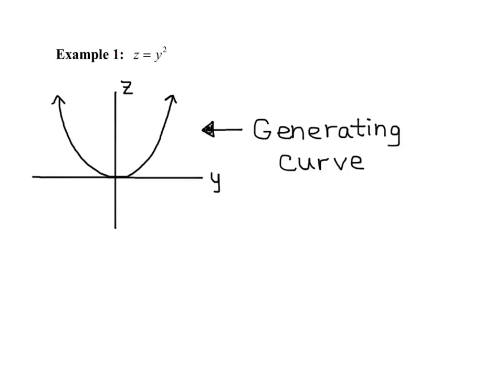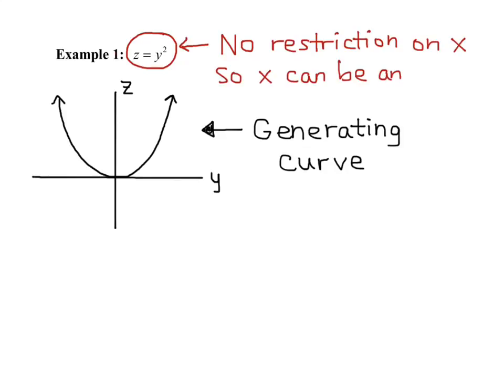Now notice that our equation is missing an x, meaning there's no restriction on x. So x can be anything. What this means is that the parabola, z equals y squared, will expand along the x-axis and create a cylinder that's parabolic in nature.